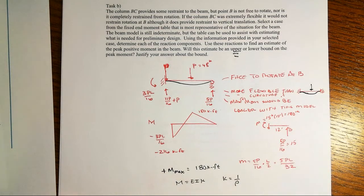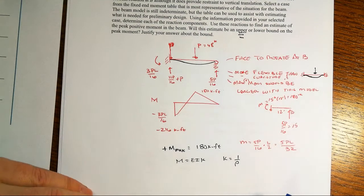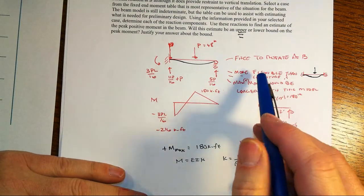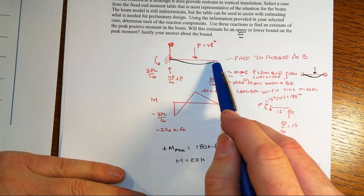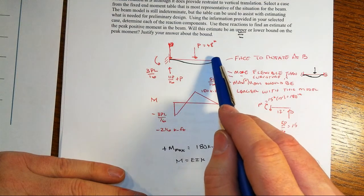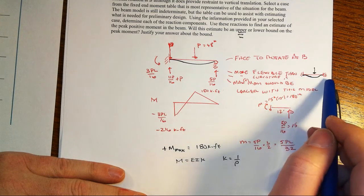Then the question is, well, is that an upper bound or lower bound for that value? And so now let's go back and think about what happens with the deflections here. In this case, we've allowed this end to rotate freely. Let's think, though, for a moment what happens when we have a fix-fix case.